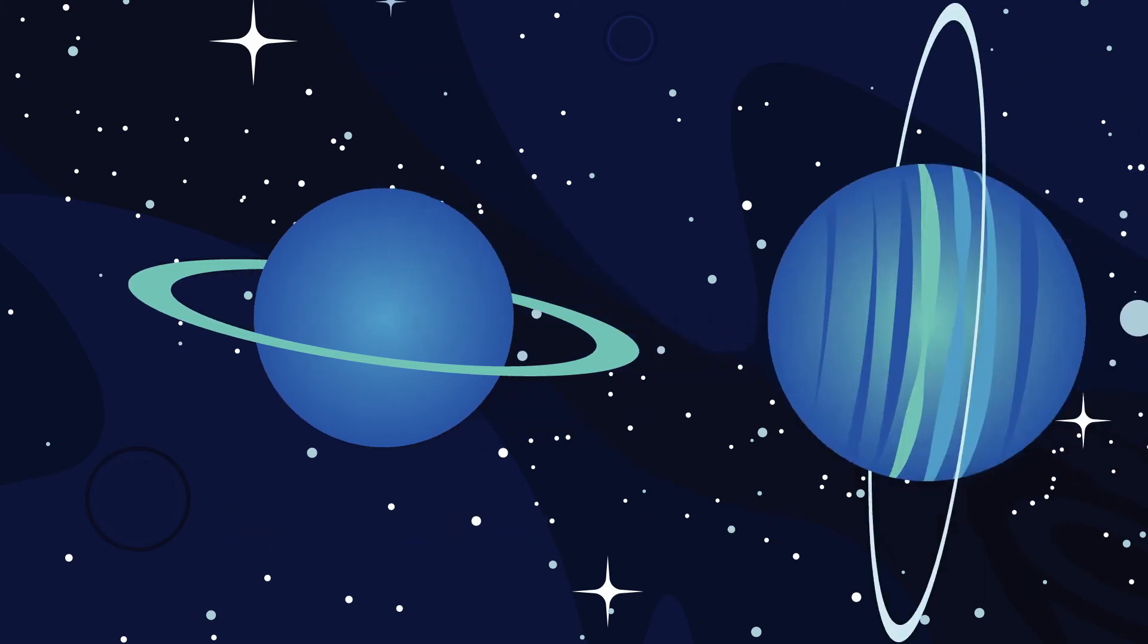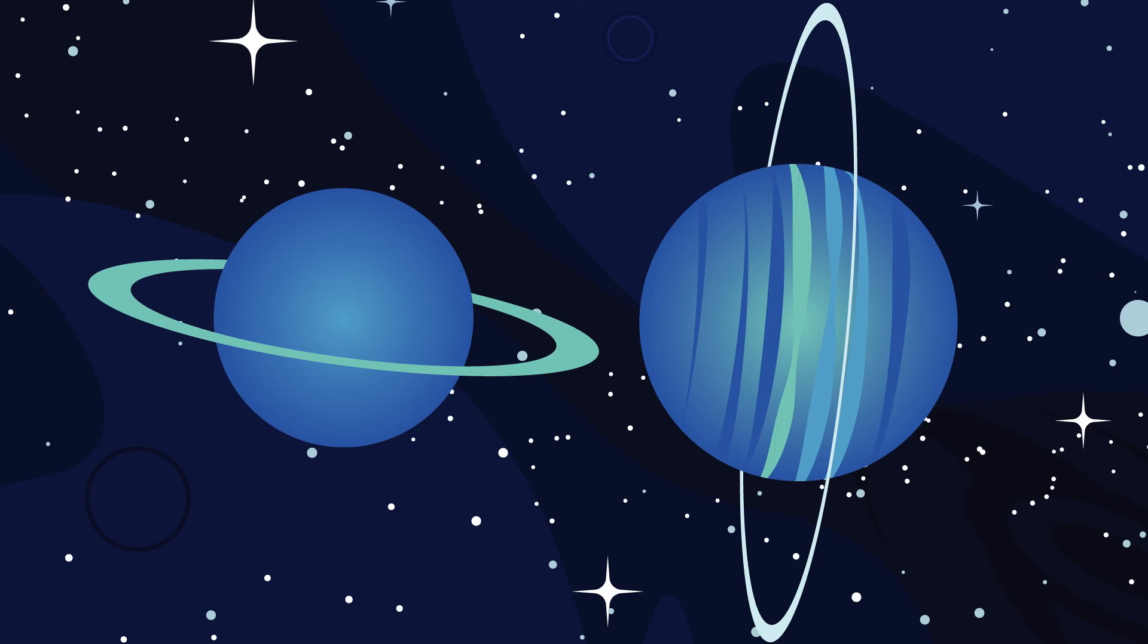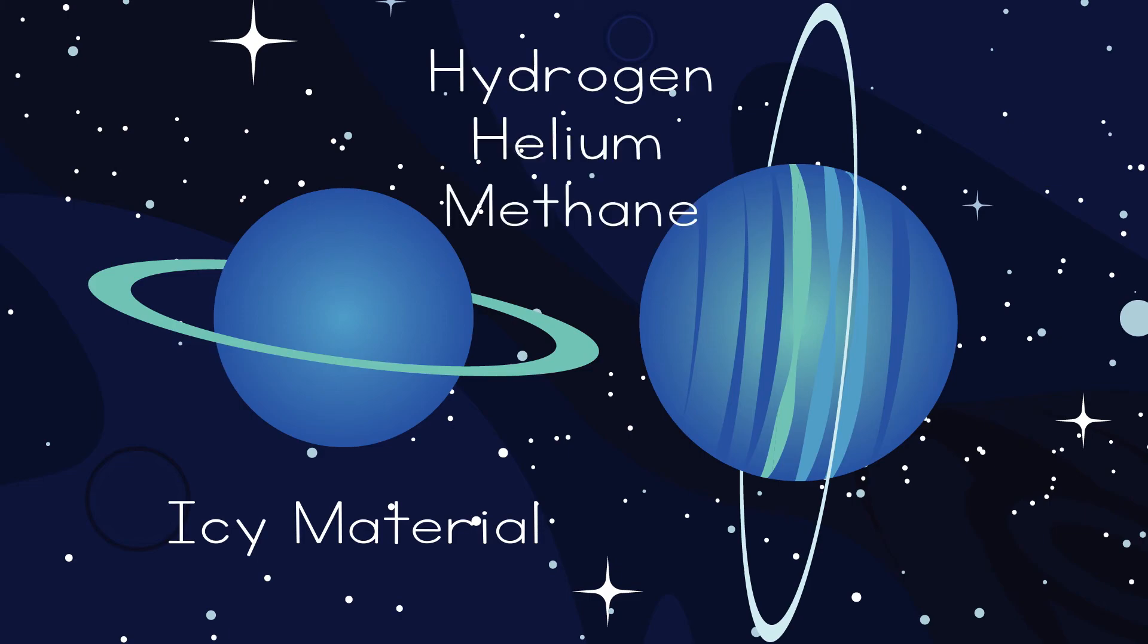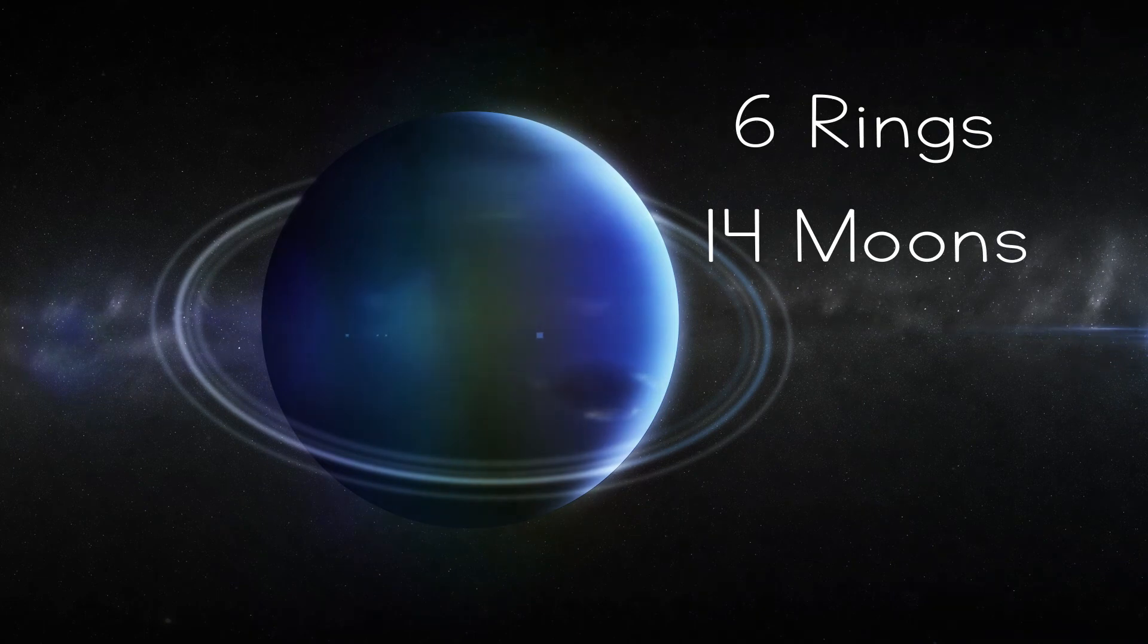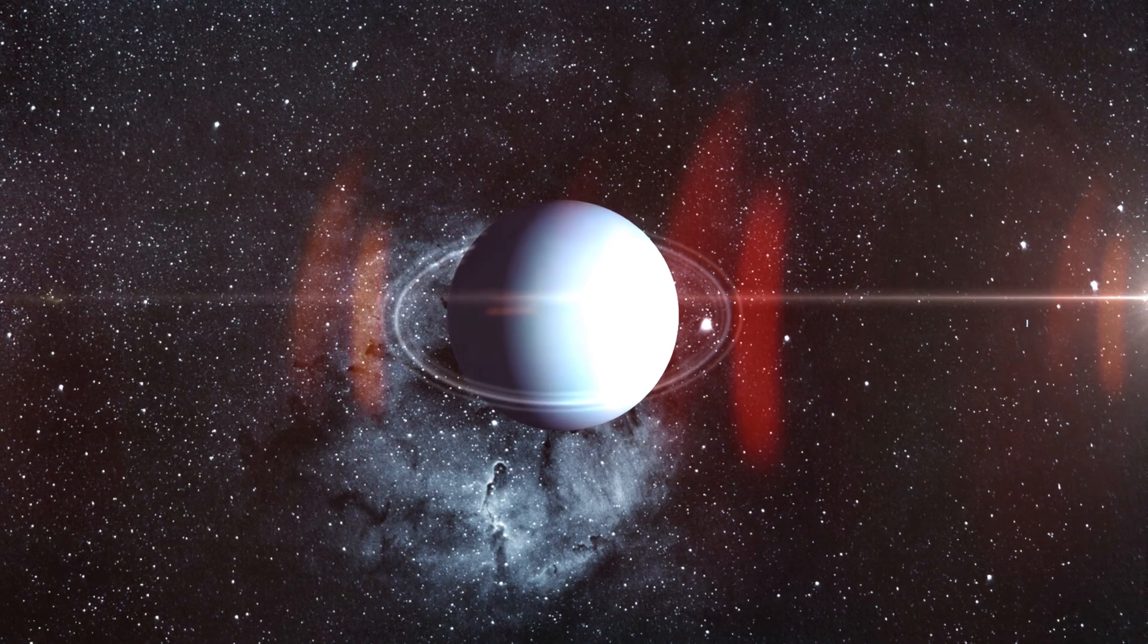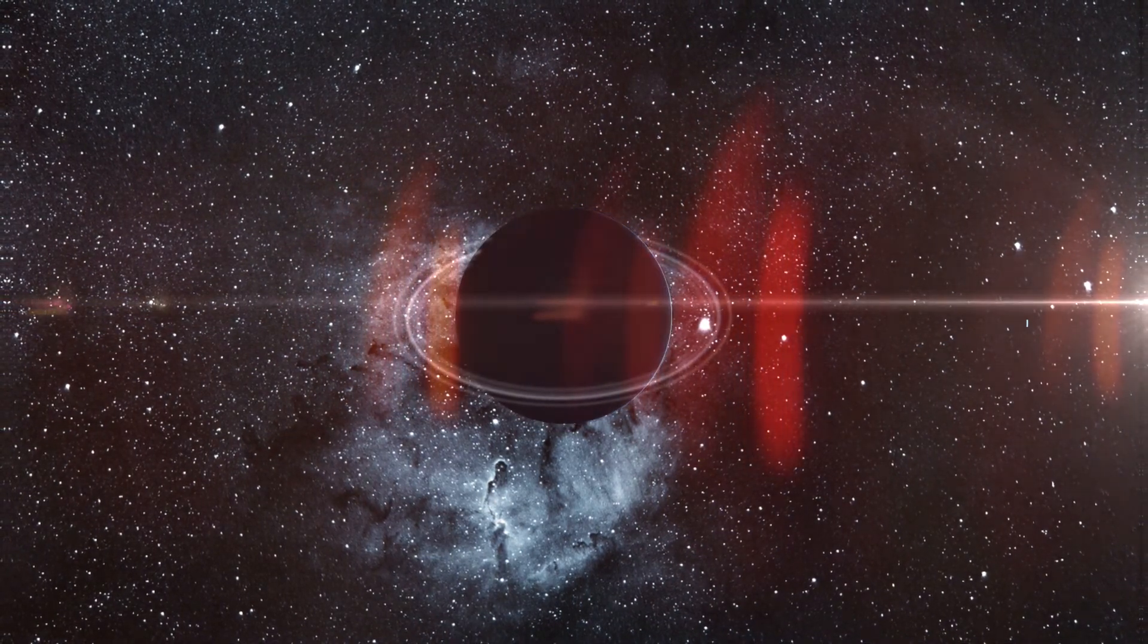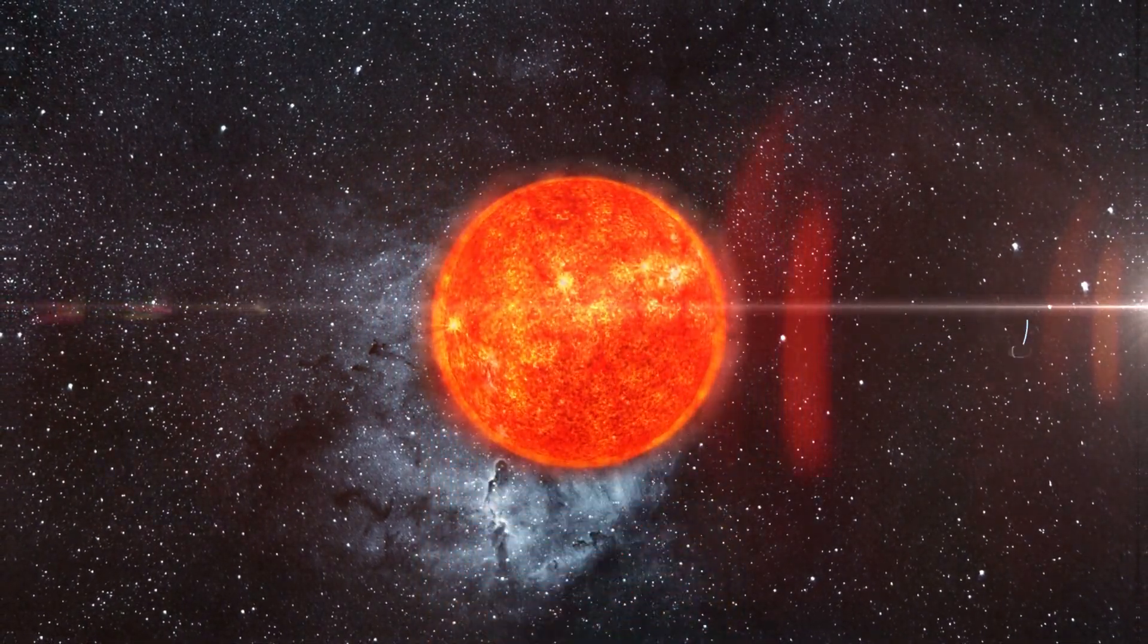Neptune is very similar to Uranus. It's about the same size and is also made of icy materials, with an atmosphere of hydrogen, helium, and methane. It has six rings and 14 moons. But again, like Uranus, there's a lot we don't know about it, since a spacecraft has not yet orbited it. Similar to Mercury, it has a very elliptical orbit.